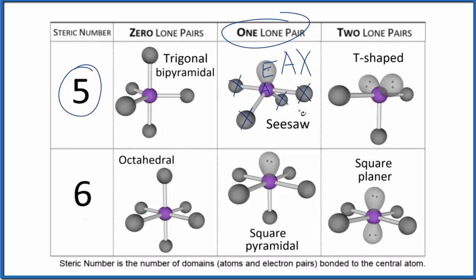So we have A, and then for X, we have one, two, three, four. And then for E, we just have one. We don't usually write the one. AX four E, if you look that up. Seesaw molecular geometry.